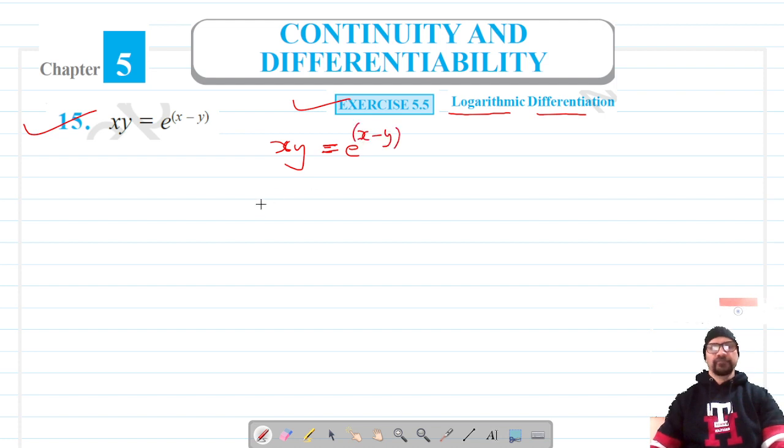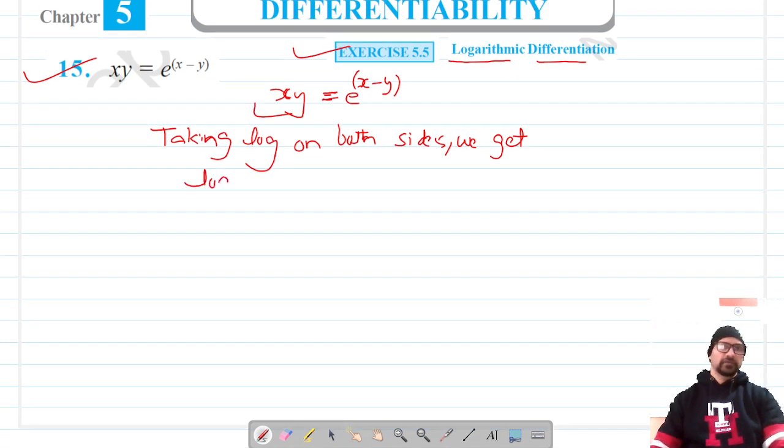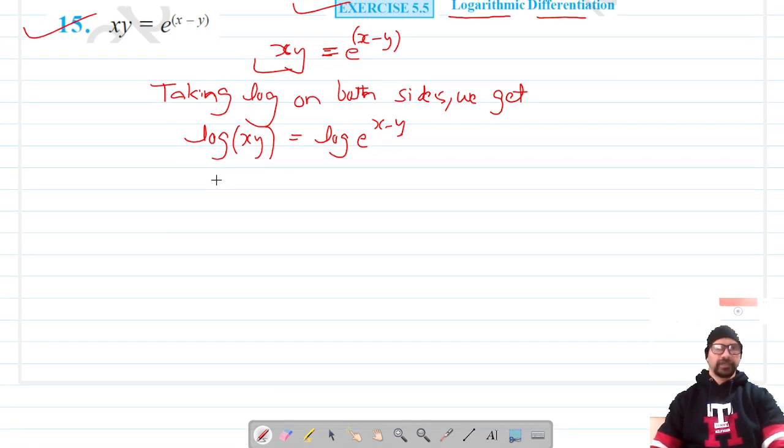It's ready to take log on both sides. So taking log on both sides, we get log(xy) = log(e^(x - y)).